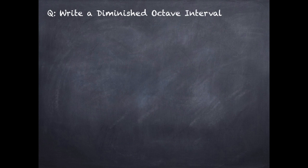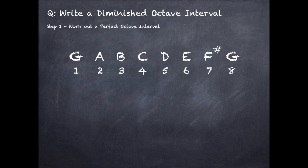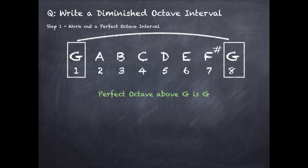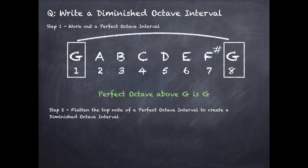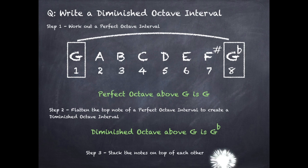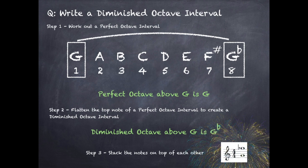To write a diminished octave, first write out a perfect octave. We go from the first note of the G major scale, which is G, to the eighth note, which is G — perfect octave is G to G. Step 2: flatten the top note of the perfect octave to create the diminished octave, so the top G becomes G flat — diminished octave is G to G flat. Step 3: stack the notes on the stave. It's just a three-step process.